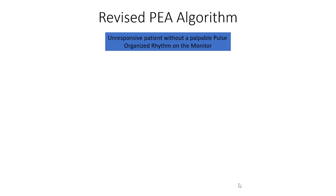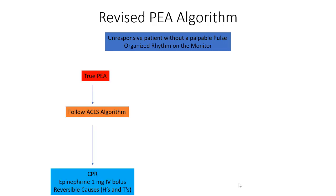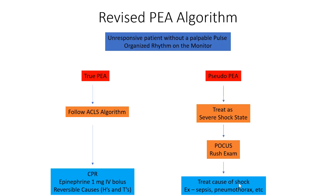So here is a look at how I think PEA should be treated. If it's determined to be true PEA on POCUS, follow your ACLS algorithm — start CPR, give one milligram of epinephrine every three minutes, and think of your reversible causes. Sadly, less than 5% will survive. If you see a pulse with POCUS, treat as a severe shock state — start fluids and norepinephrine infusion, and use POCUS to do a RUSH exam to find the cause of the shock. Surely more than 5% of these patients should survive.